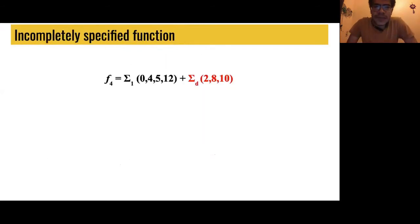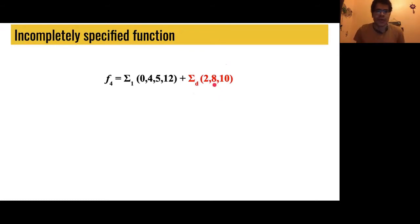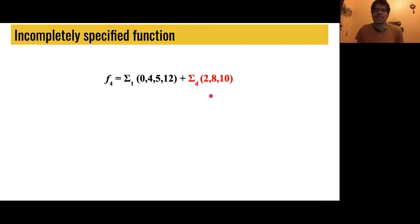In the case of incompletely specified functions, we have the minterms, and we also have this part that is called the don't care terms, where the output of the function is not important. So we can select the output value as our convenience, which is one in our case. This trick has the objective of helping to generate adjacencies in the Quine-McCluskey algorithm.